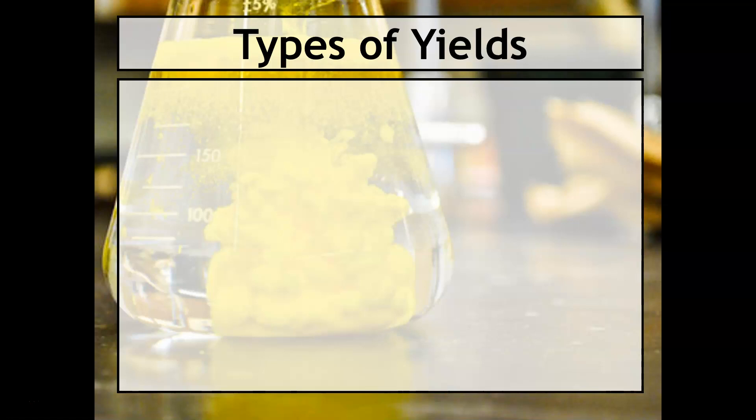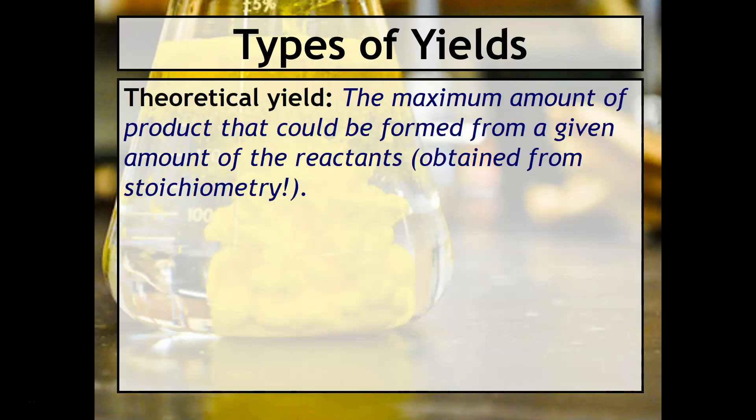There are two major types of yield. The theoretical yield is the maximum amount of product that can be formed from a given amount of the reactants, obtained from stoichiometry. This is essentially what we've been doing all along - you've been calculating the theoretical yield.